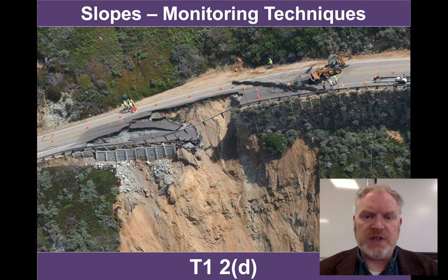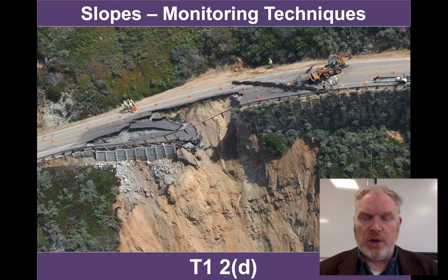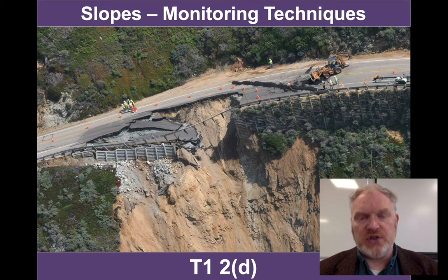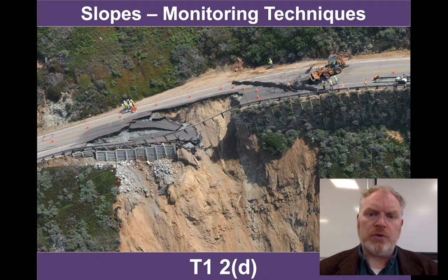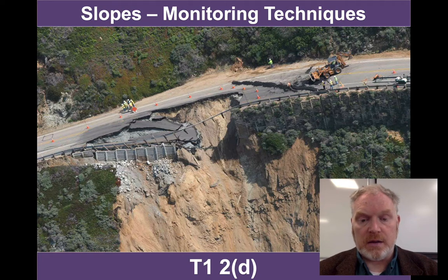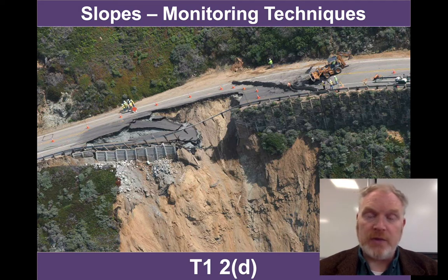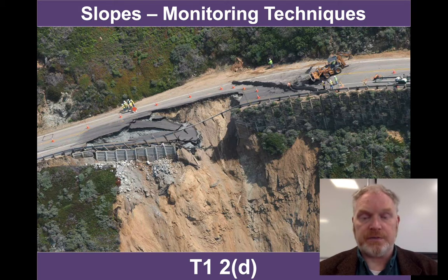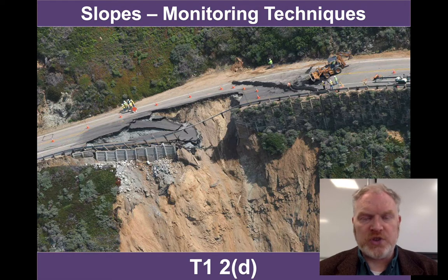We've seen from previous lessons the ongoing problems caused by unstable slopes. This is a geohazard that we here in Britain need to deal with, and it has the potential to cause a great deal of disruption and economic loss. So it's really important that we can monitor unstable slopes and determine when and where they're likely to fail. There are a number of different methods we can use for this, and in this lesson I want to go through some of them to explain how they work.